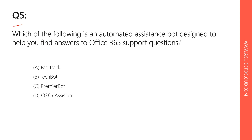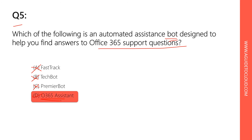Question 5: Which of the following is an automated assistance bot designed to help you find answers to your Office 365 support questions? FastTrack is a team for design, implementation, and migration — not a bot. A 'Tech Bot' or 'Premier Bot' are not the answer. The correct answer is D — the Office 365 Assistant, which is an automated bot designed to help you find Office 365 support answers.